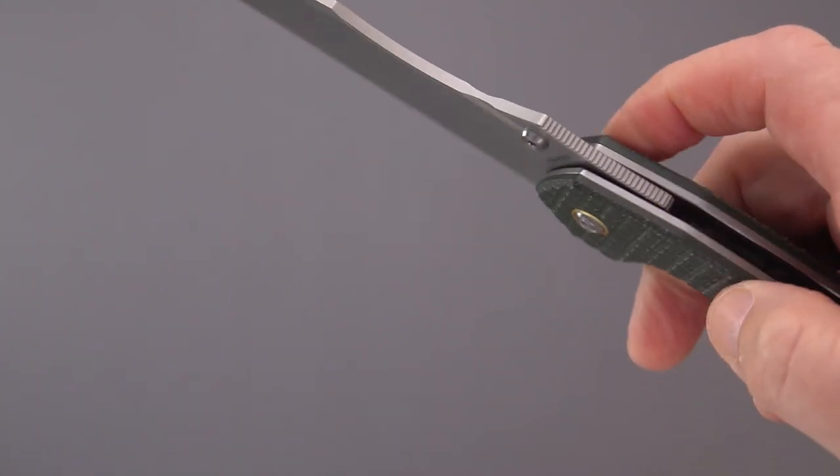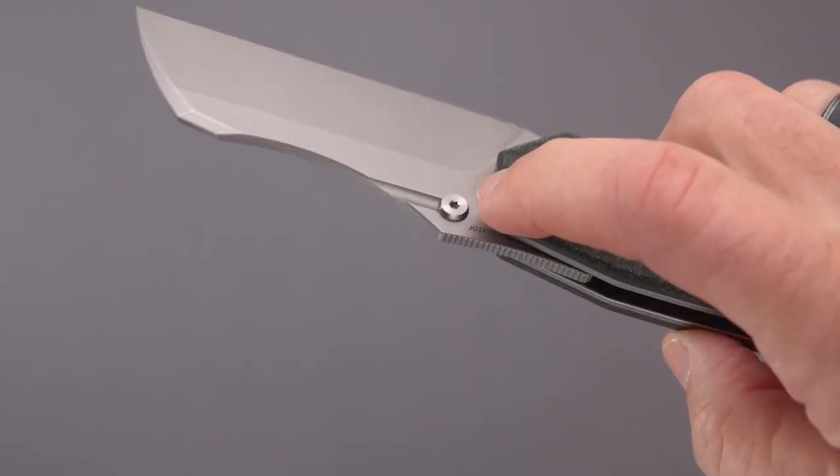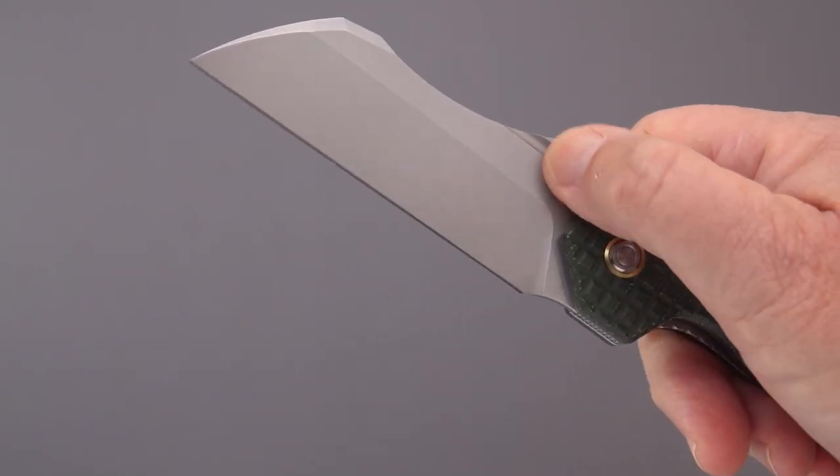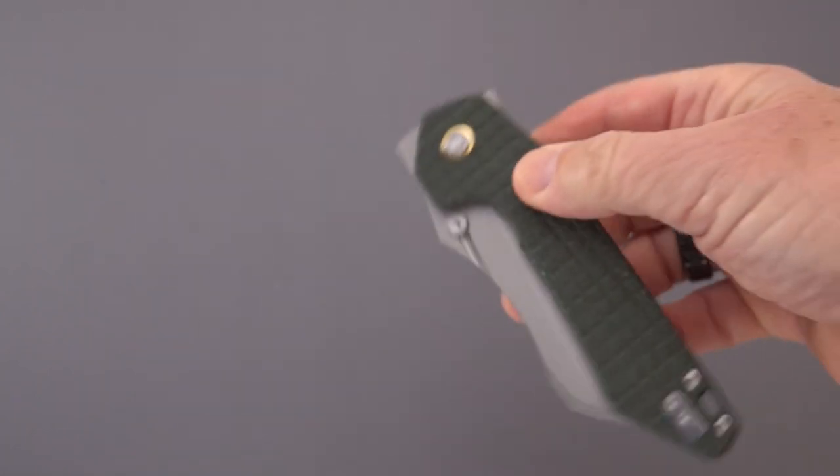Now it also came with, and I'll see if I can show them to you before we're done, raised thumb studs that replace these. Now this is either just considered to be a blank or was considered to be simply a lower level thumb stud. Now there's three ways to open the knife.